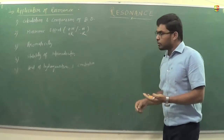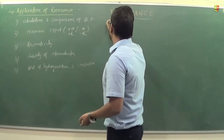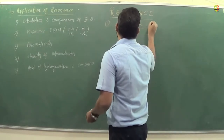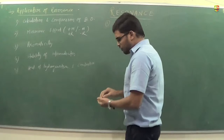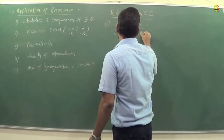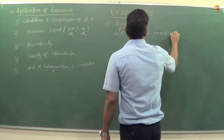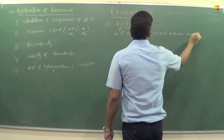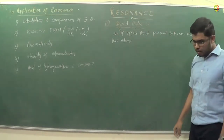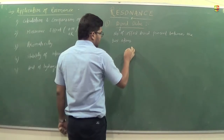We are going to discuss first the calculation and comparison of bond order in this session. Bond order is defined as the number of effective bonds present between two atoms in a molecule.